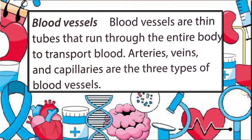Arteries are the type of blood vessels which carry blood from the heart to different parts of the body. Veins carry blood from different parts of the body to the heart. Capillaries are the smallest blood vessels. Many capillaries reunite to form veins, and these capillaries help in the exchange of gases, water and nutrients between the blood and the tissues. Arteries are mostly red in color and veins are mostly blue in color.